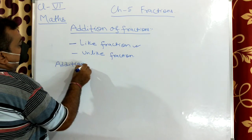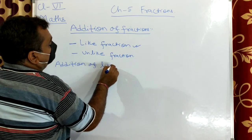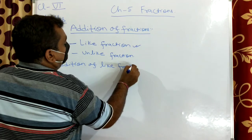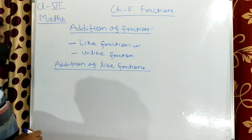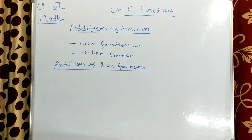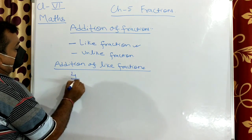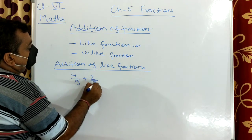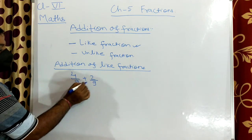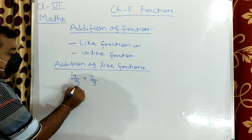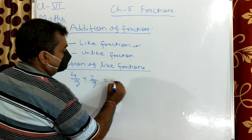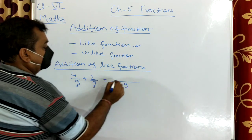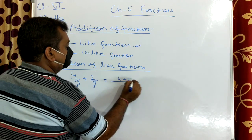For addition of like fractions, suppose two fractions are given: 4 by 9 plus 2 by 9. Since both fractions have the same denominator, we take 9 as common: 4 plus 2 equals 6 by 9, which simplifies to 2 by 3.